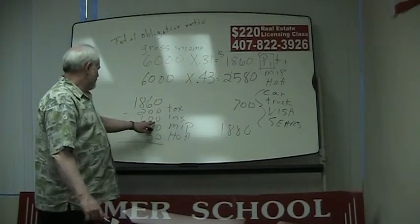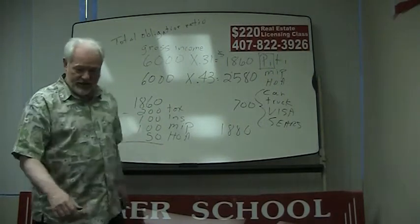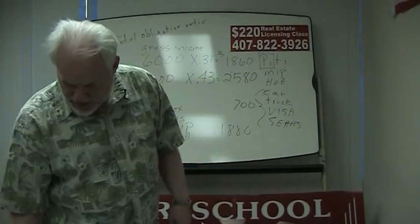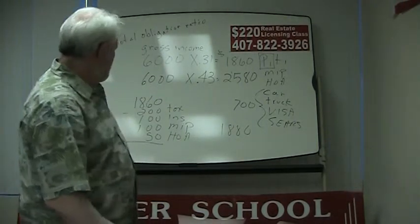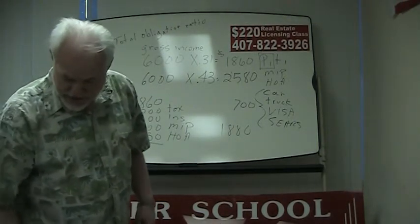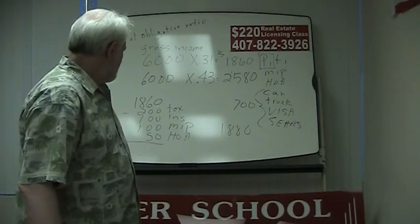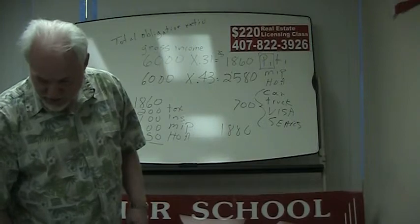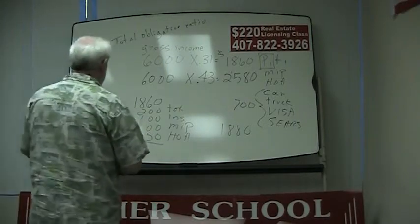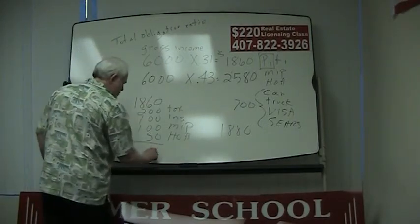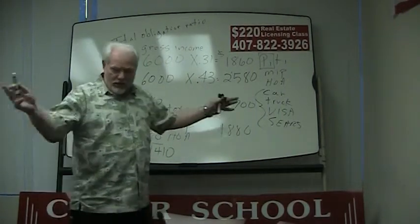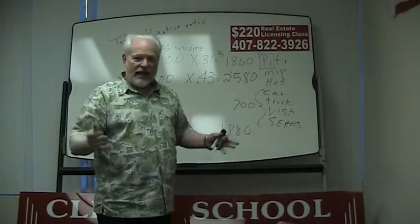If we subtract this out, that's $450. So 1860 minus $450 is a $1,410 principal and interest payment.